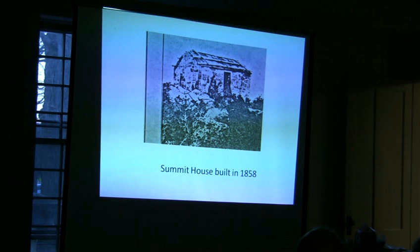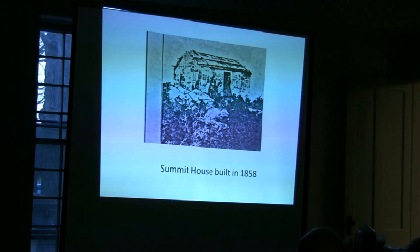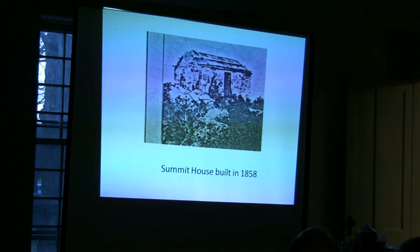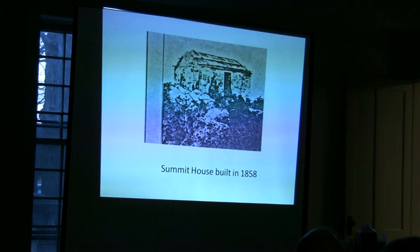This is the only picture we could find of the Summit House before it was destroyed — vandals pushed it down. You can see some small logs going across the roof. It could be corrugated sheet metal underneath, though I'm not sure if they had corrugated in 1858. Later they did use metal, but it wasn't corrugated.